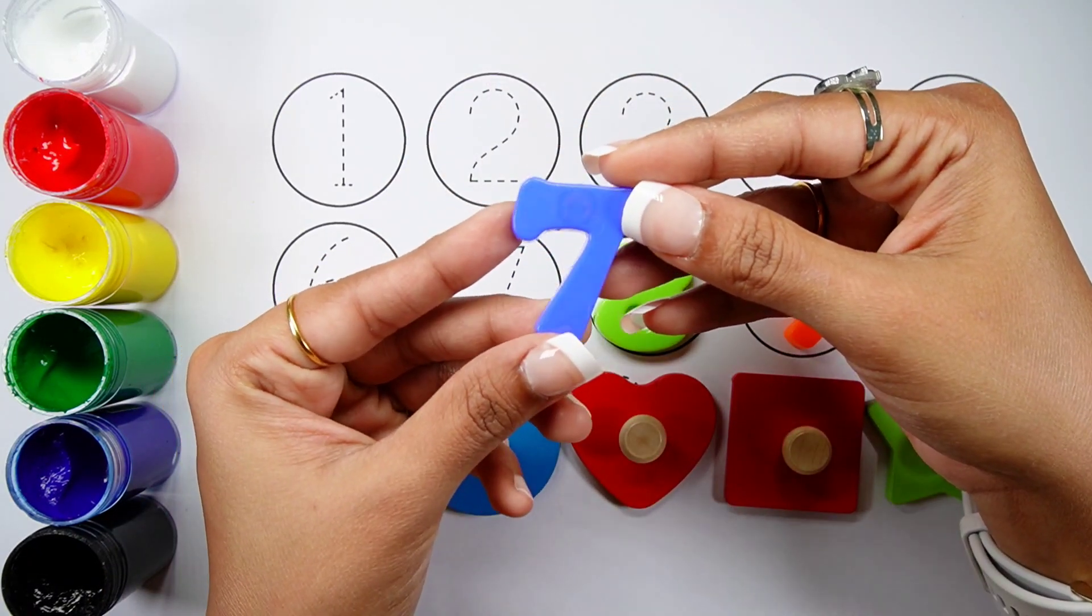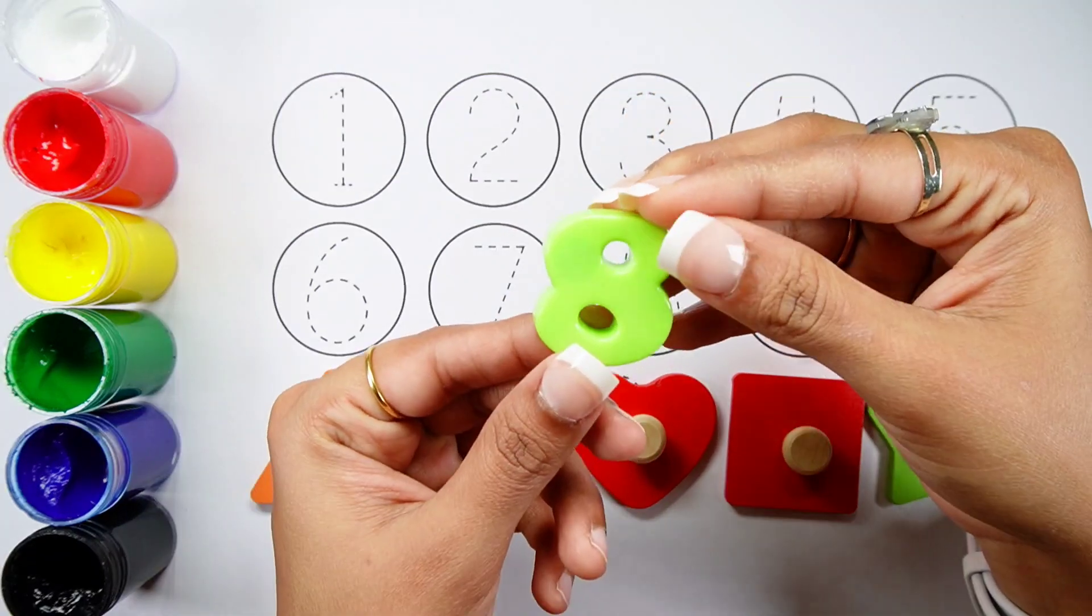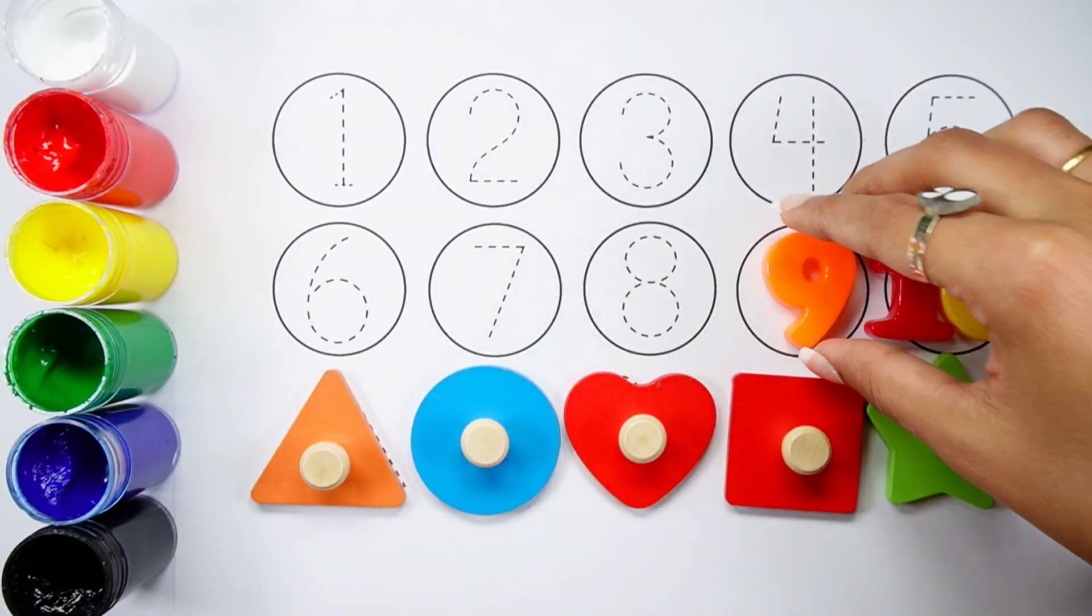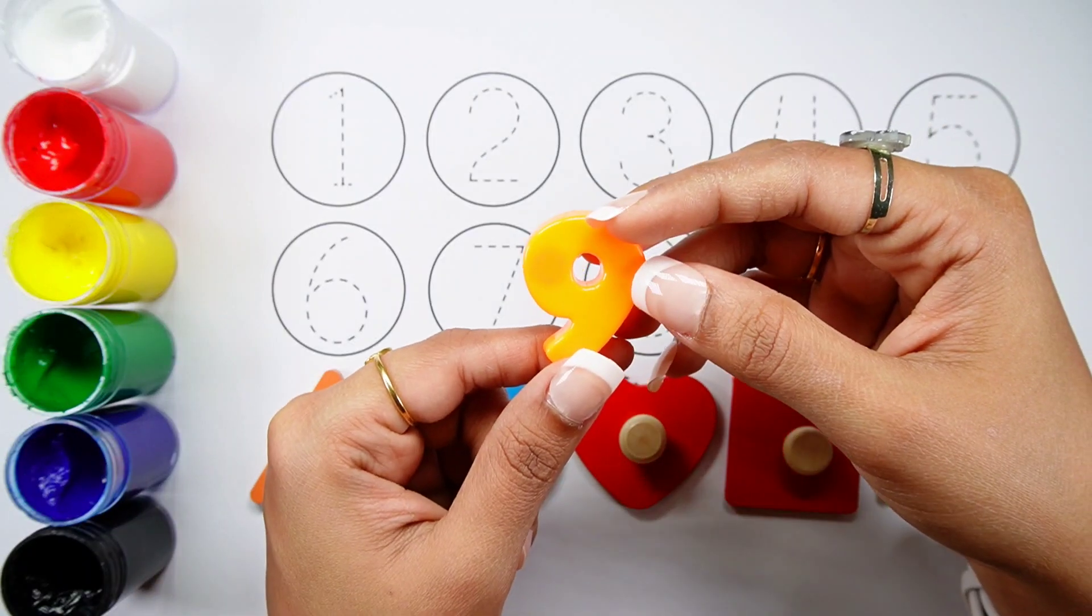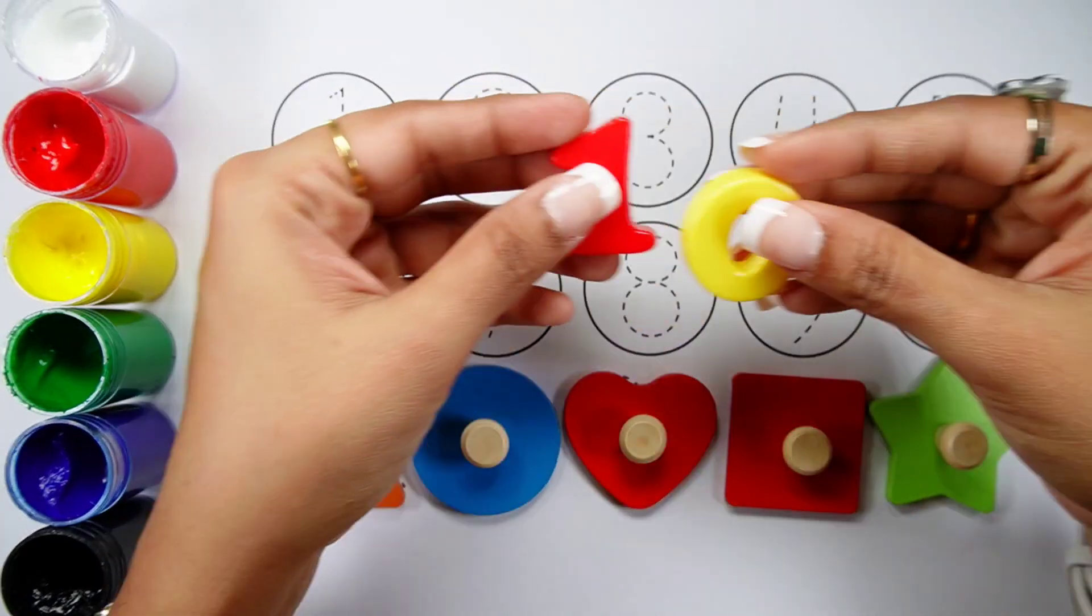Number seven blue color. Number eight green color. Number nine orange color. Number ten.